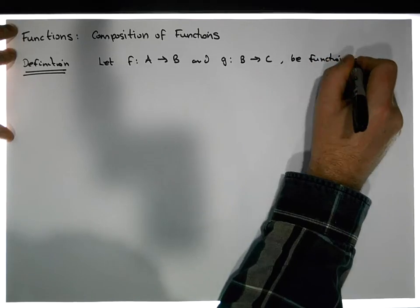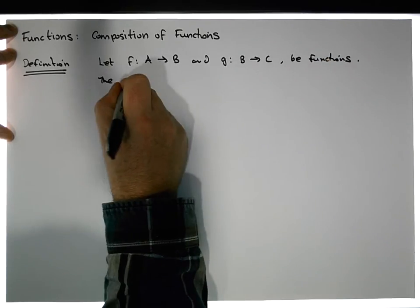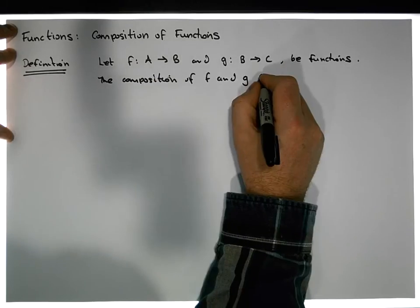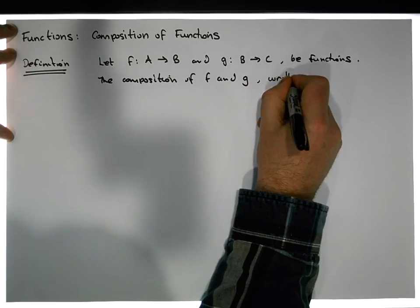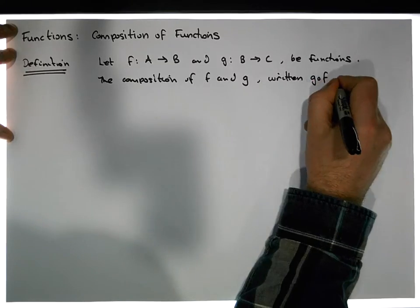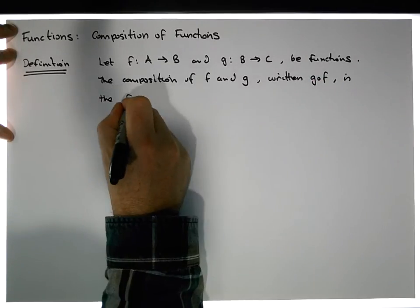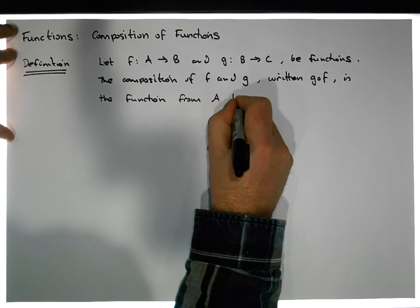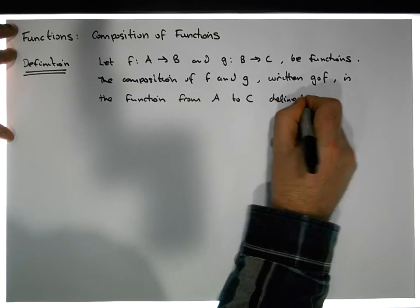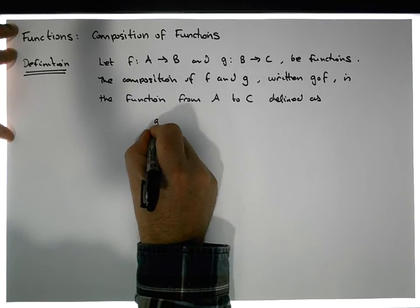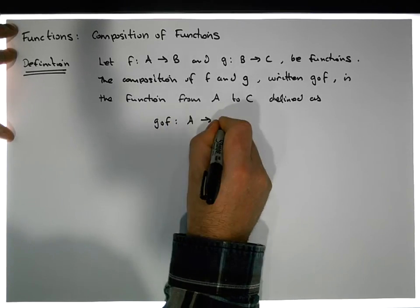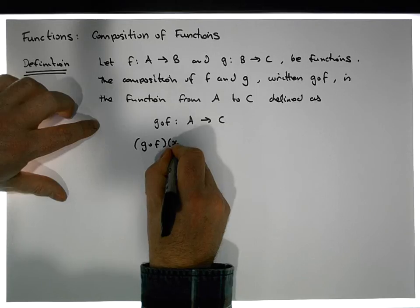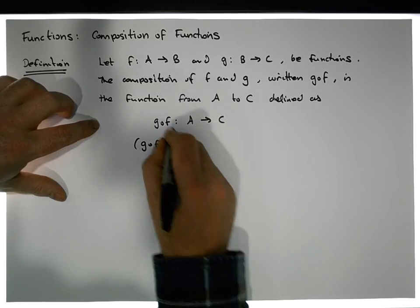So we have two functions by definition. Then the composition of F and G, written as G after F, is the function from A to C. So G after F is a mapping from A to C, and it's defined as G after F of X.